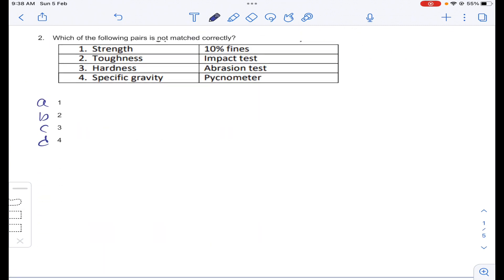Coming to second question, which of the following pairs is not matched correctly? Strength, toughness, hardness, specific gravity. Specific gravity is measured with pycnometer, so it is matched correctly.